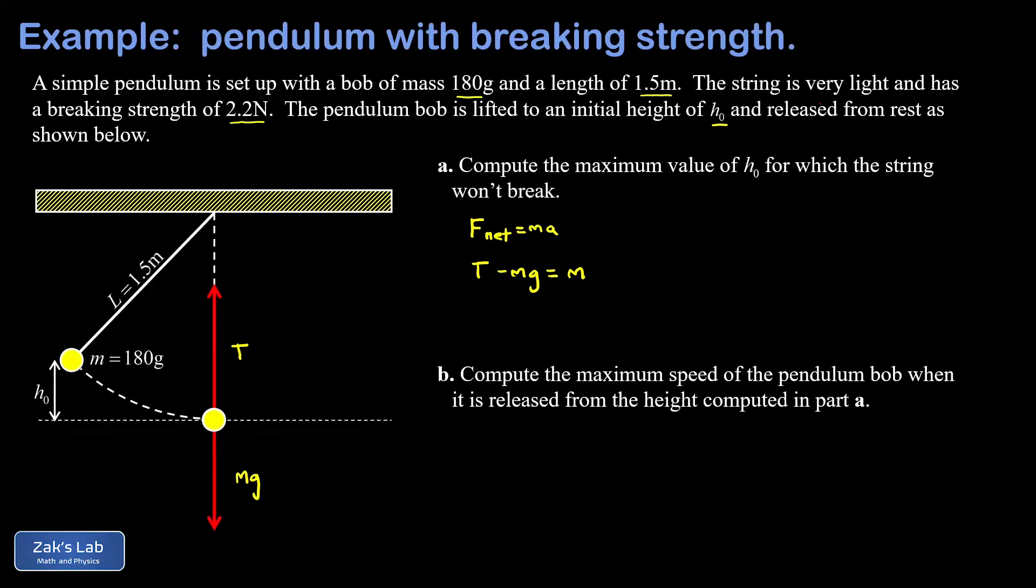The acceleration is going to be v squared over r, where v is the speed at the bottom of the trajectory. So we plug in v squared over r, where r is the radius of curvature. Well, that's just the length of the string in this case, and we call that l in the diagram.